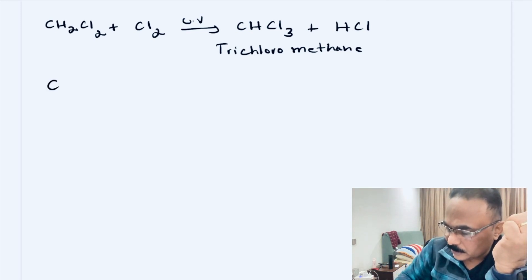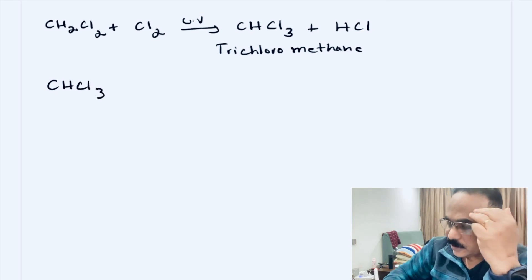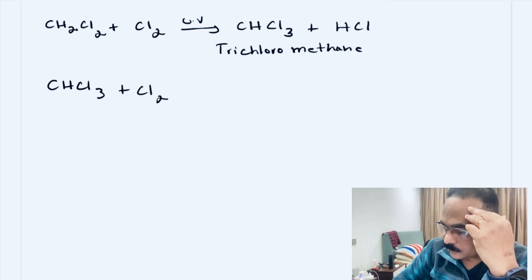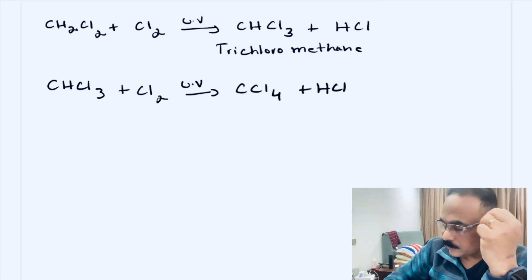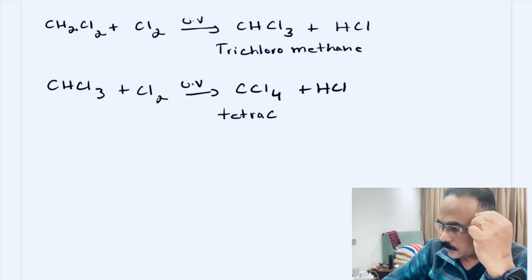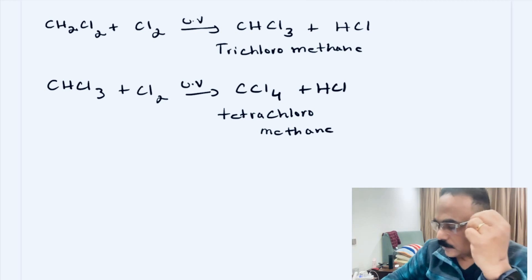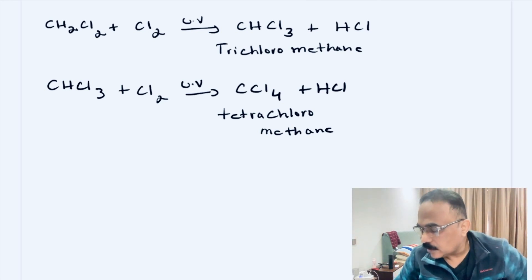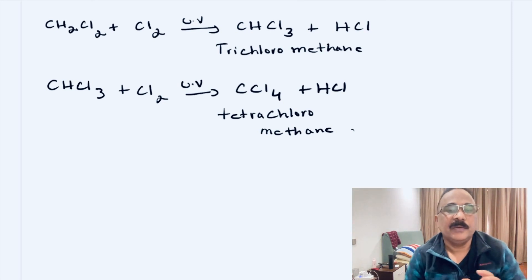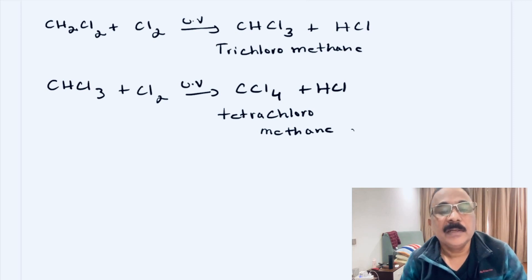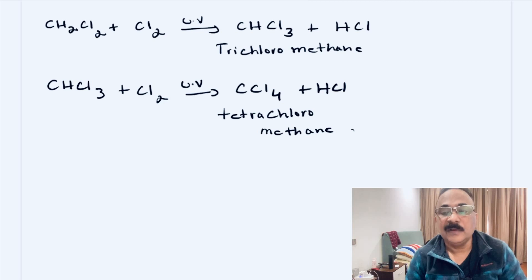The last reaction: CHCl3 — trichloromethane or chloroform — reacts with Cl2 in the presence of UV, and we get CCl4 plus HCl. As there are four chlorine atoms, we call this tetrachloromethane, plus hydrogen chloride. Tetrachloromethane can also be called carbon tetrachloride. This is the final product obtained when we go through the substitution reaction of the saturated hydrocarbon with chlorine in the presence of UV light. This is the characteristic of the saturated hydrocarbon.